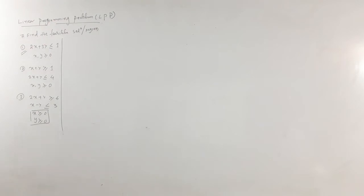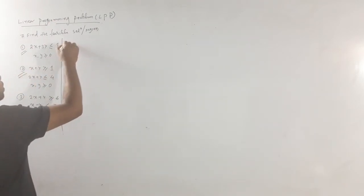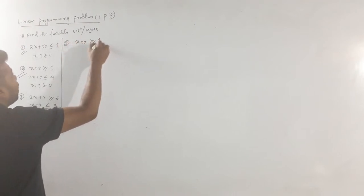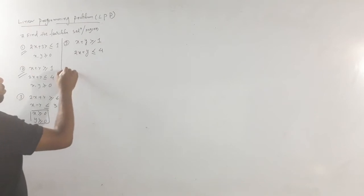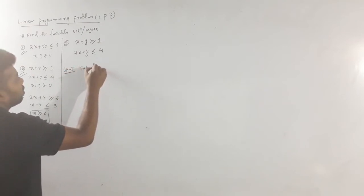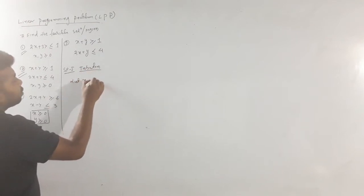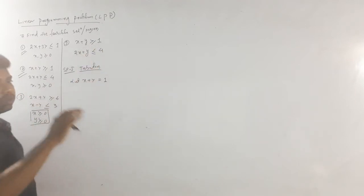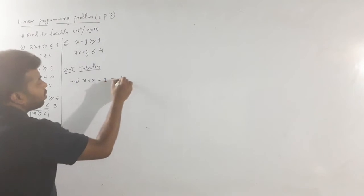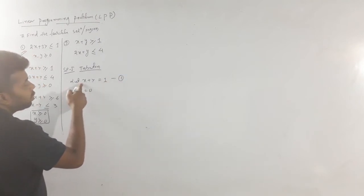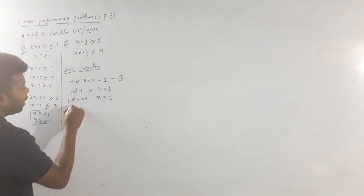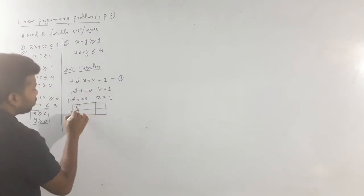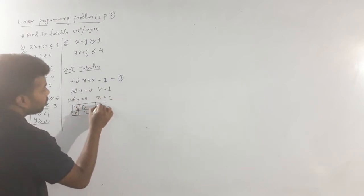Next question, Number 2: x + y ≥ 1 and 2x + y ≤ 4. Step 1 is tabulation. Let x + y = 1 (Equation 1). Put x = 0: y = 1. Put y = 0: x = 1. So the table for Equation 1 gives points (0, 1) and (1, 0).